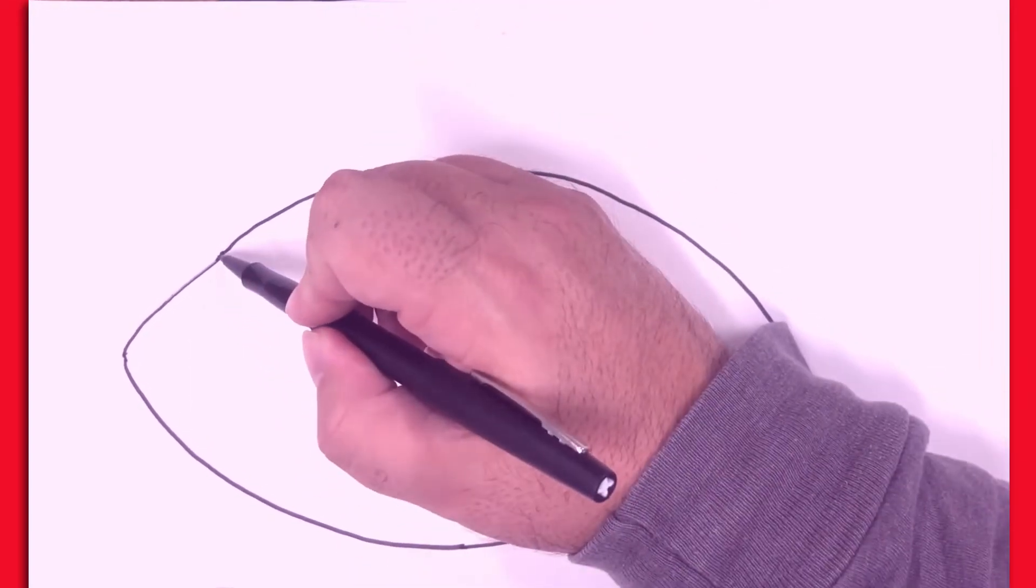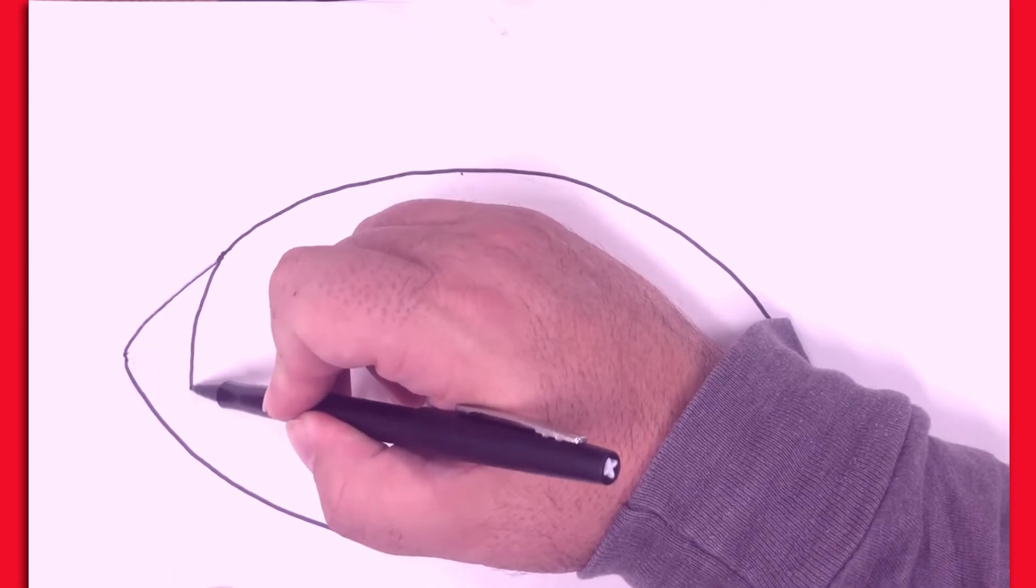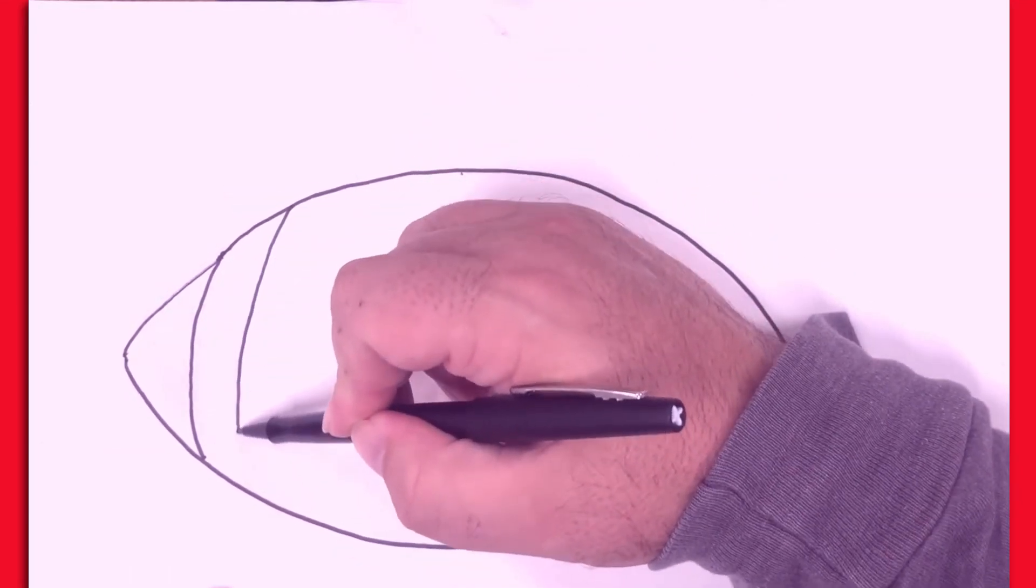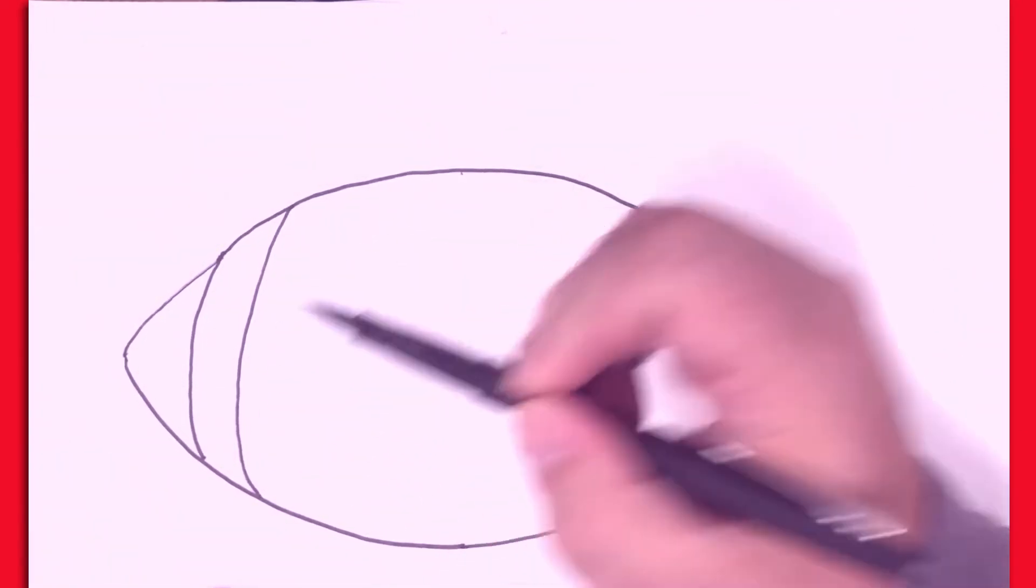So the next thing I'm going to do is put on the white stripes on either end of the ball. And notice I make these lines curved in the same way that the ball does.